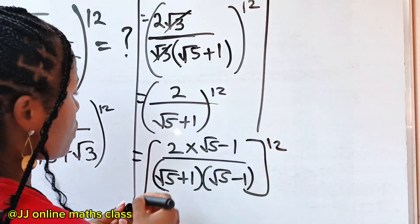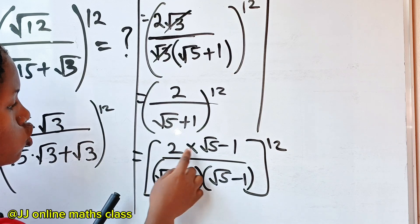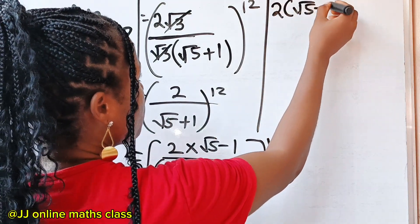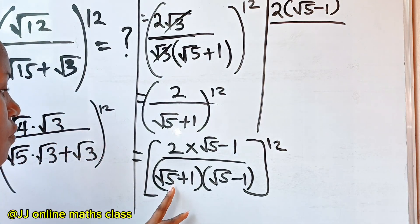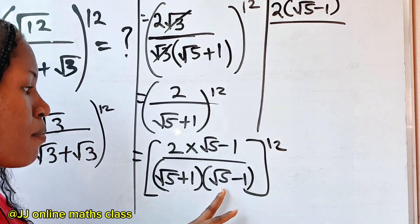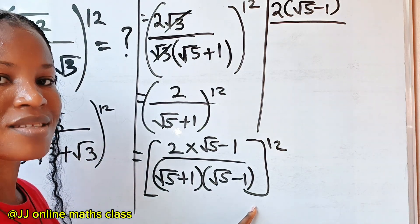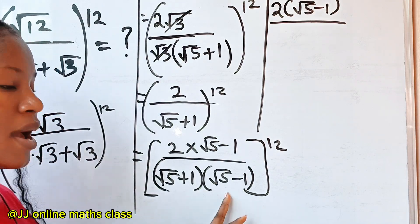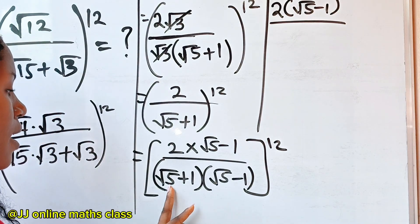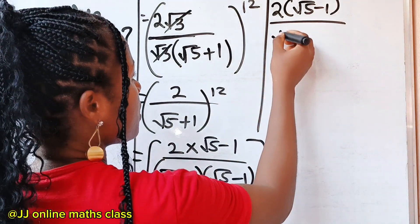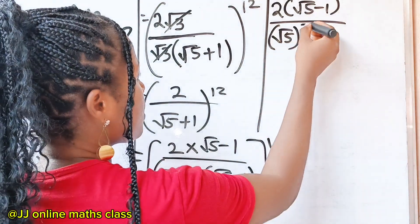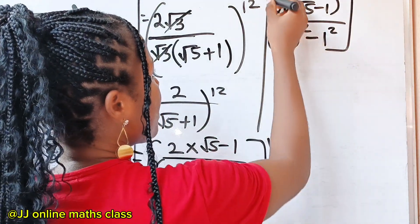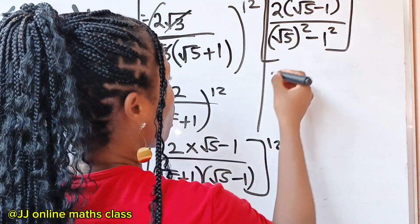Now we continue. We have two brackets times root five minus one, divided by: when you have (a + b)(a − b) this is the difference of two squares, equal to a squared minus b squared. Our a here is root five, so this is root five squared minus b squared, where b is one — so minus one squared. The whole of this is raised to the power of 12.